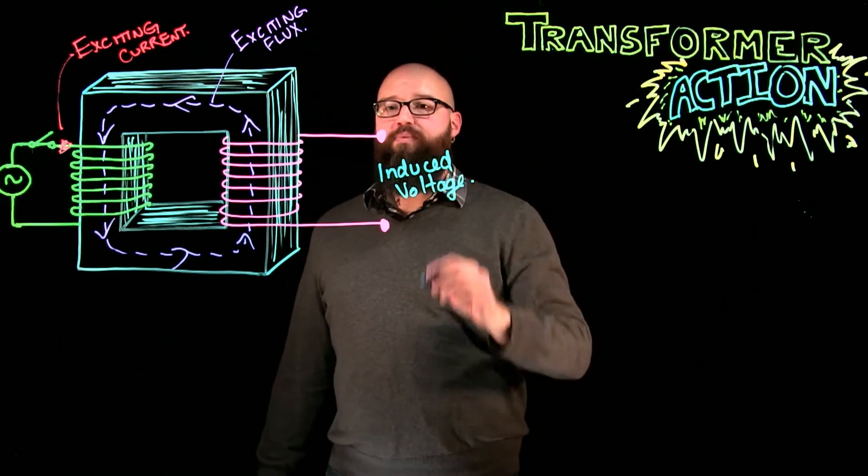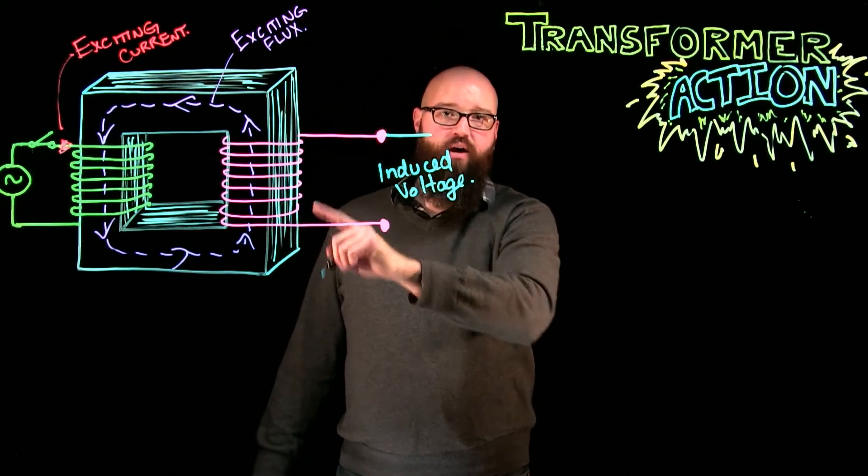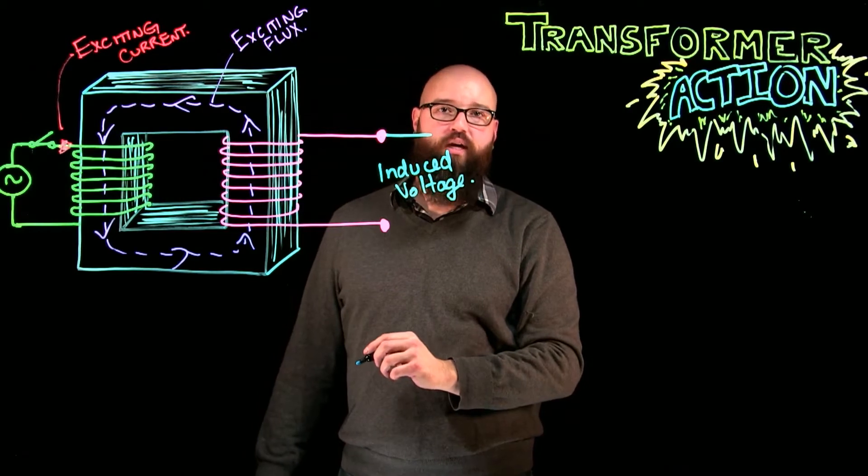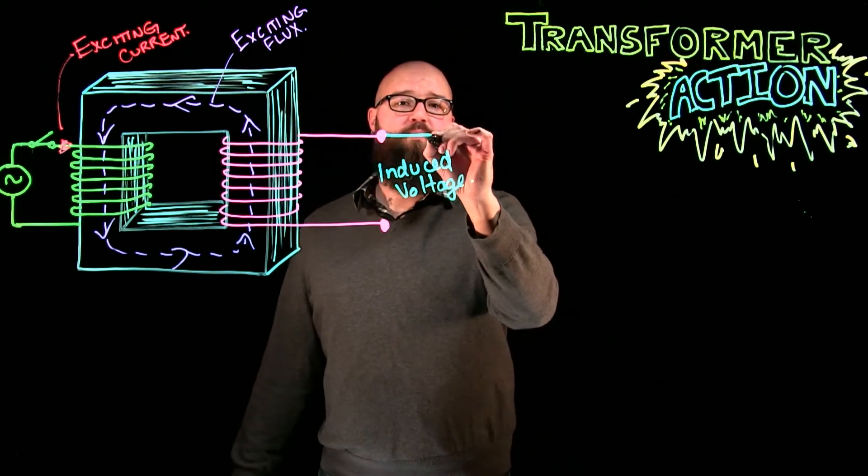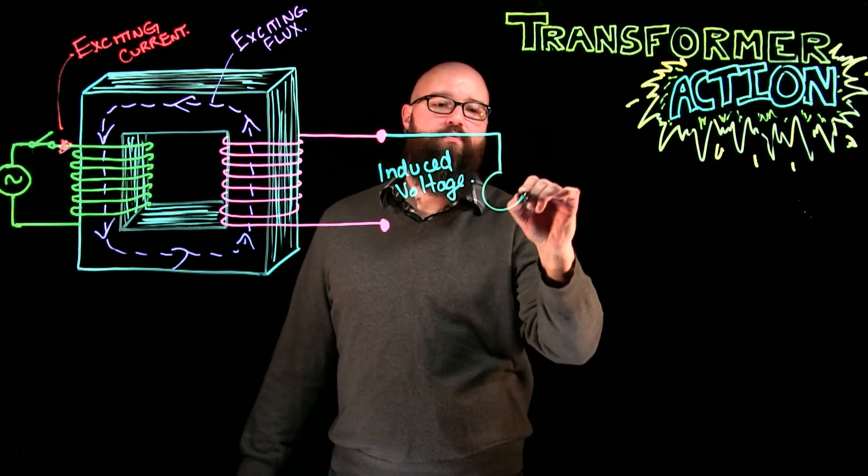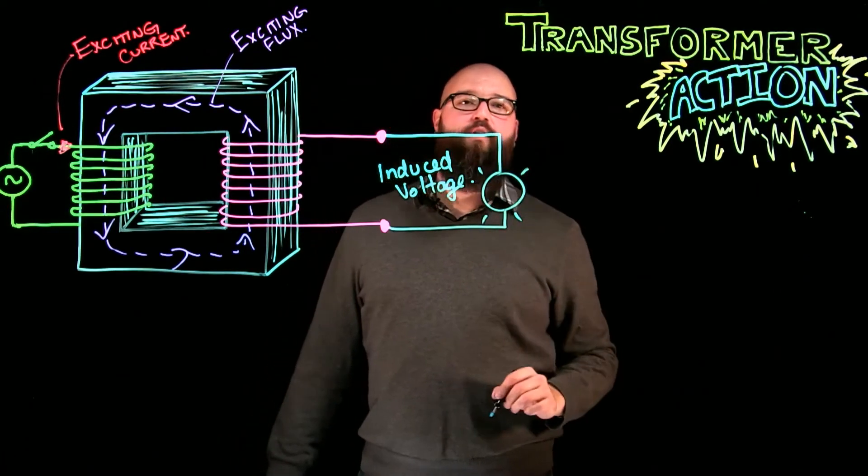So, the minute we apply a load to the secondary, first of all, at this point right now, we have zero current flowing in our secondary because it's an open circuit. Current can't flow. But the minute we add a load, we now have a closed circuit.